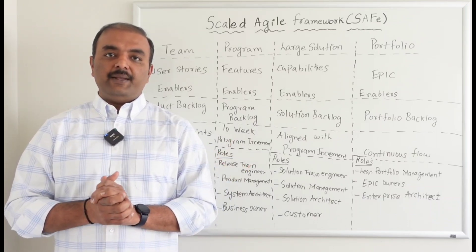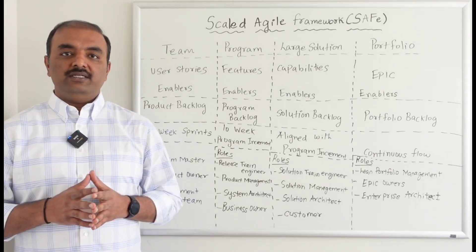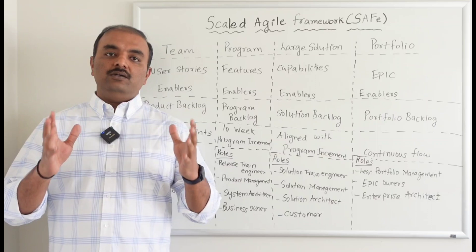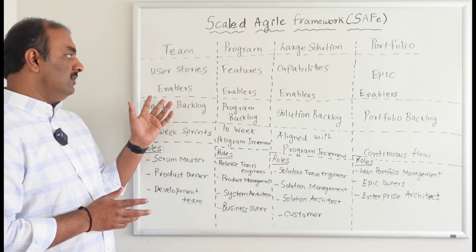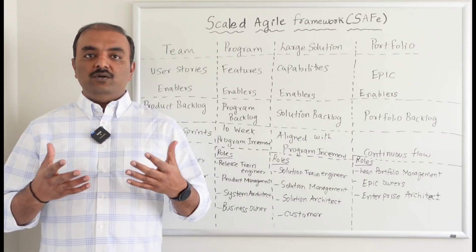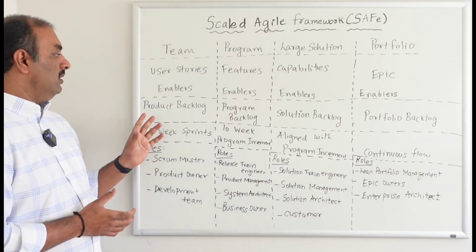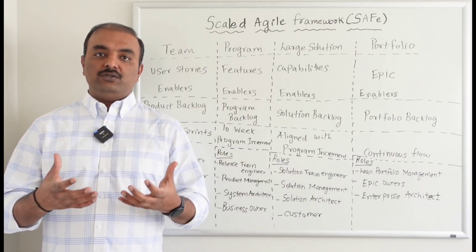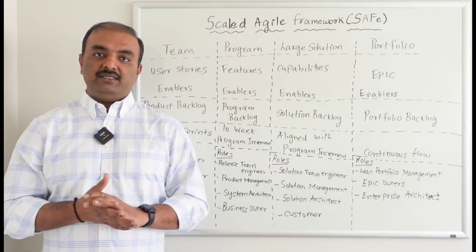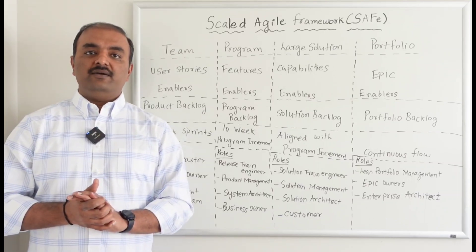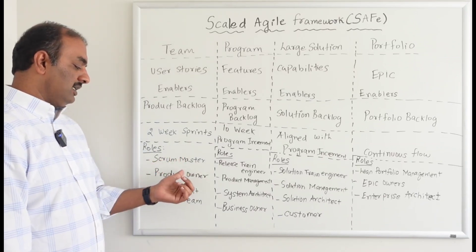So let's focus on today's training. What is the Scaled Agile Framework? If you see column number one — Team — most of us are already working on Agile and are well aware of these terminologies. In Agile we have a team where we work on user stories and sometimes enablers. Enablers are the initial setup work we have to do before doing user stories, like setting up a database. We have a product backlog which lists all user stories so we can work based on priorities, with two-week or three-week sprints, and roles like Scrum Master, Product Owner, and development team.